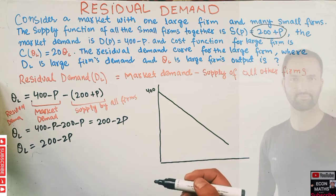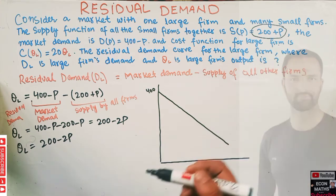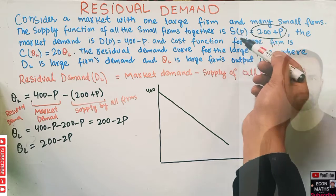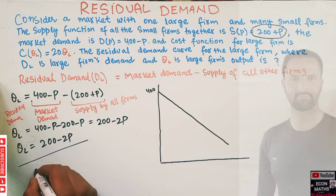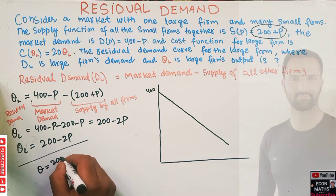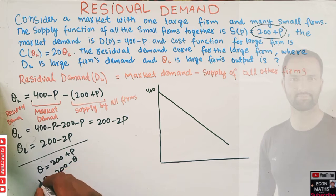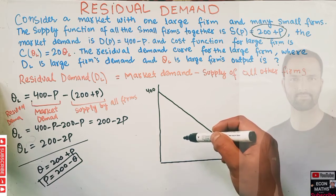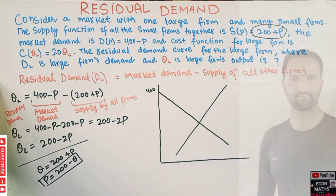Now let me explain what residual demand actually means. The supply function of smaller firms is Q = 200 + P. If we rearrange, P = Q − 200. We can denote this as the supply function of smaller firms on the graph.